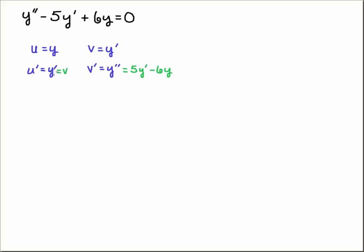Notice that y-prime, that was v. So u-prime is equal to v. And notice that we have v-prime is equal to y-double-prime. So taking that derivative was judicious because if you look up here, you have a y-double-prime.